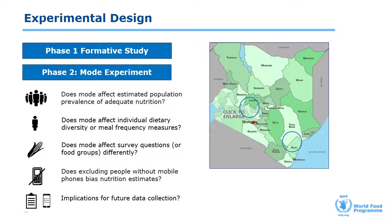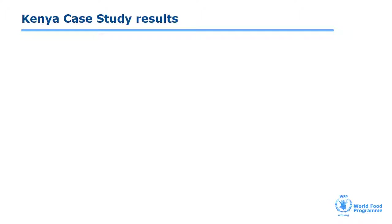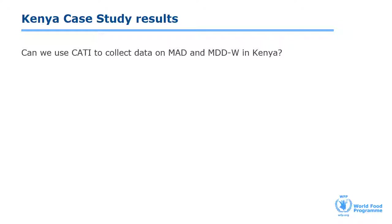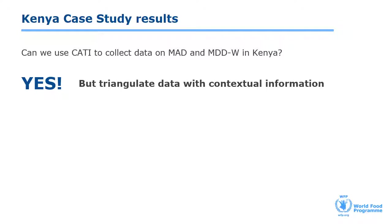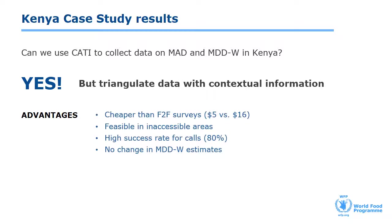Using the test-retest design, we compared the prevalence of MAD and MDDW for face-to-face and CATI, as well as the mean scores of MAD and MDDW for face-to-face and CATI. We also looked at any potential sampling bias and compared the cost of face-to-face and CATI surveys. The total sample size was 2,200 and we collected data from 32 sub-locations in Kitui and Baringo. Can we use CATI to collect data on MAD and MDDW in Kenya? The overall answer is yes, but triangulation of CATI data with other sources of contextual information is important. As with other remote surveys, we found that one advantage of using CATI for nutrition is the savings in cost. For this study, CATI surveys were much cheaper than face-to-face surveys: it cost $5 per successful survey for CATI versus $16 for one done face-to-face.